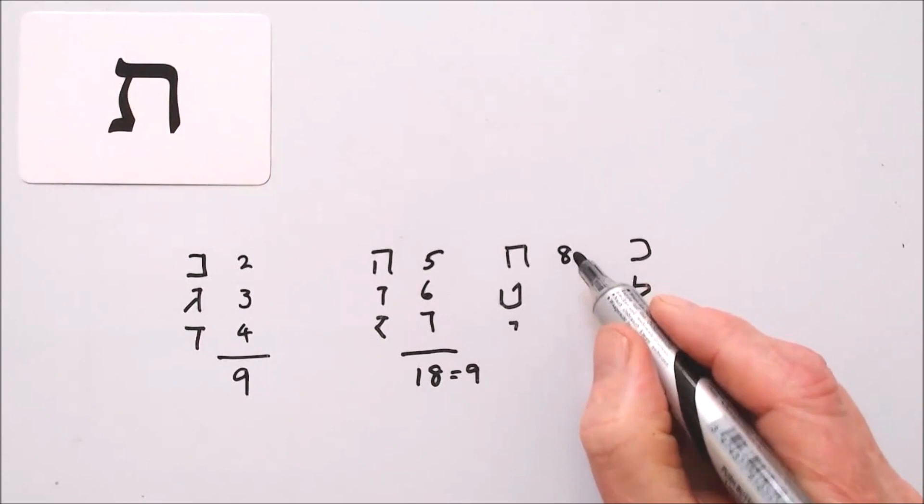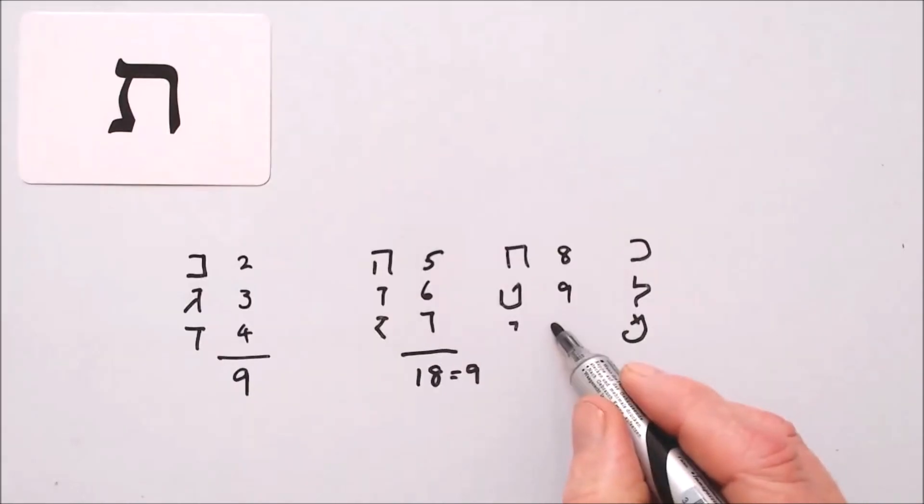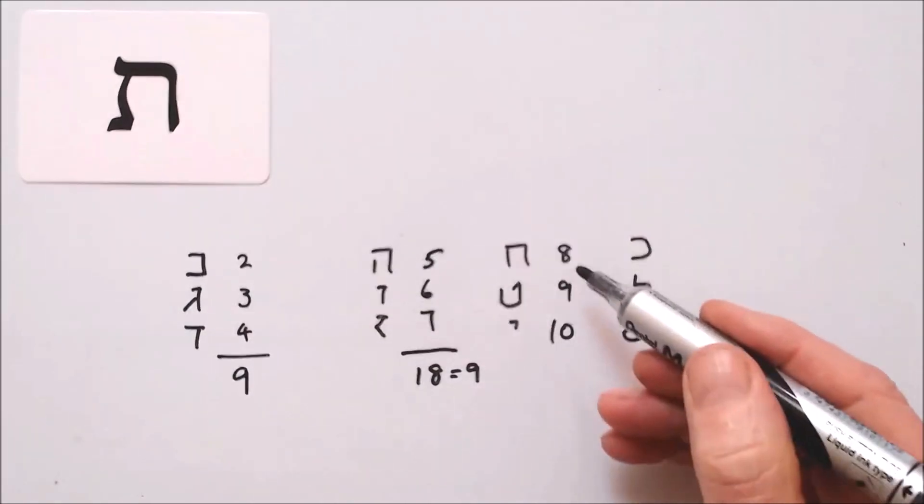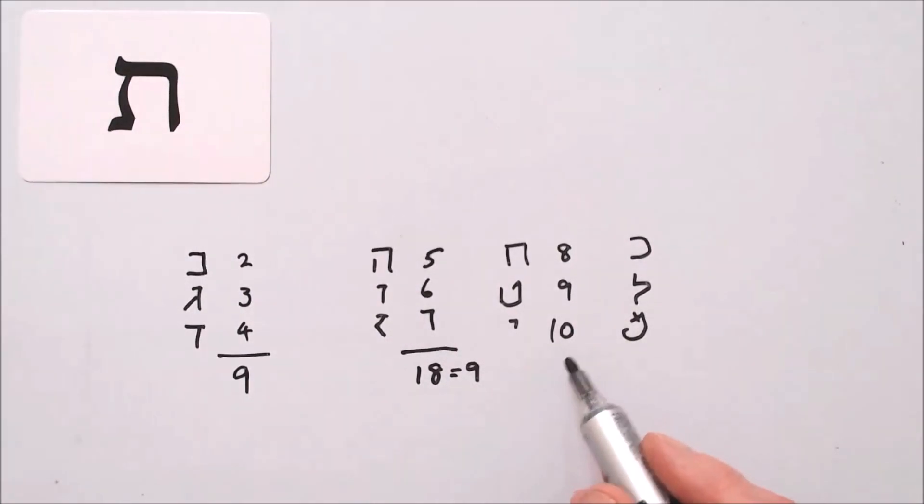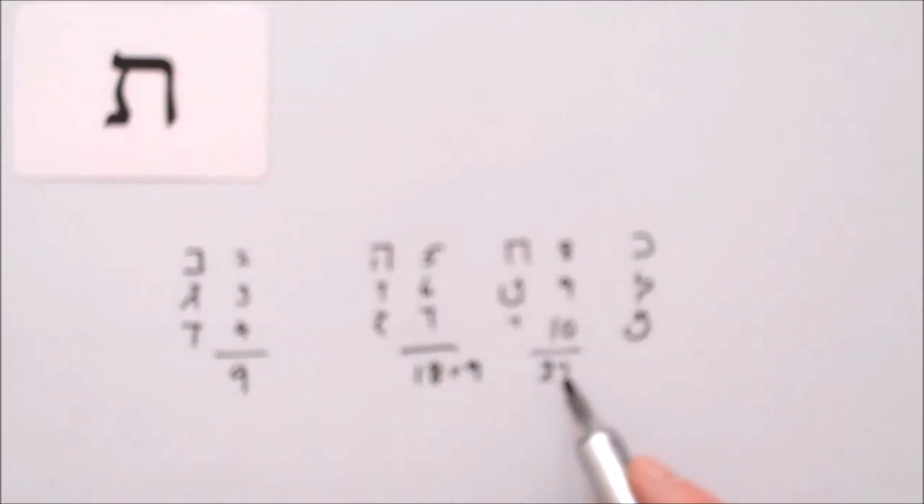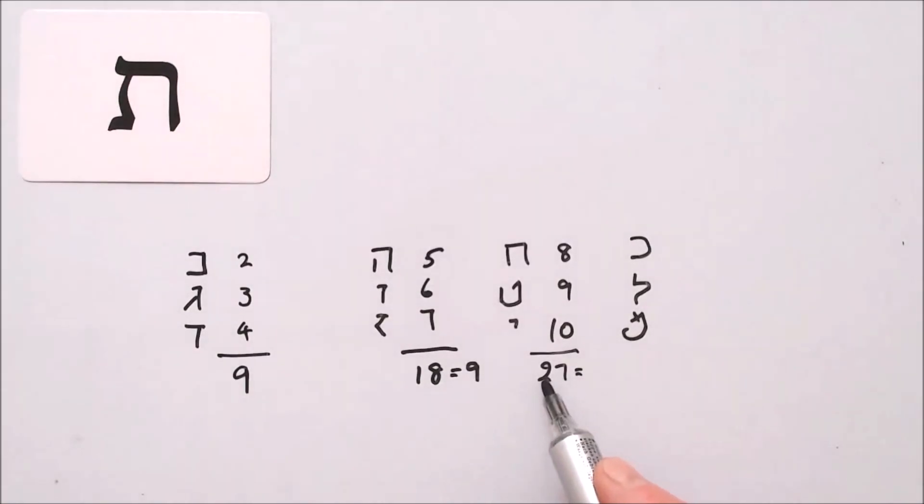Chet is eight, Tet is nine, Yud is ten. Eight plus nine is seventeen, plus ten is twenty-seven. To get the digit sum, we add the two plus the seven equals nine.